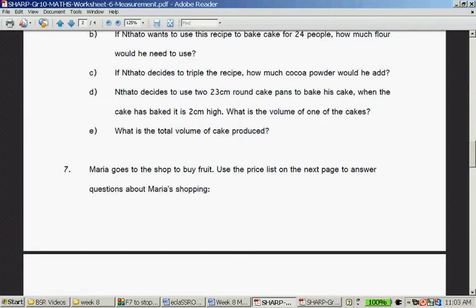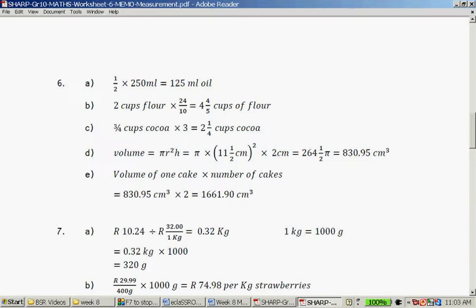Tata decides to use a 23 centimeter round cake pan to bake his cake. When the cake has baked 2 centimeters high, what is the volume of one of the cakes? This is work that we're also going to do a bit later. So it's pi r squared times height. Pi we use is 3.14 times 11 and a half centimeters. Remember, radius is half of 23 squared times 2. So it's 11 and a half squared times 3.14 times 2, and that is 830.53 cubic centimeters.